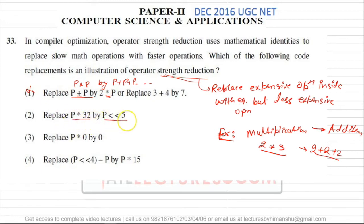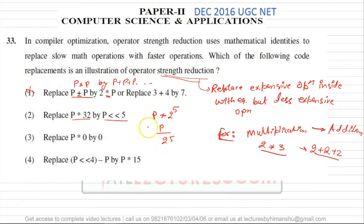The second option says: replace p×32 by p shift 5, meaning shifting p by 5 to the left. If you are shifting something to the left, you are multiplying that number by 2 to the power of the number of shift operations. So left shifting by 5 means multiplying by 2⁵, which is 32. Therefore p×32 and p left shift 5 give the same value — they are equivalent.